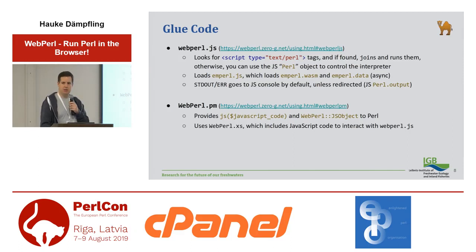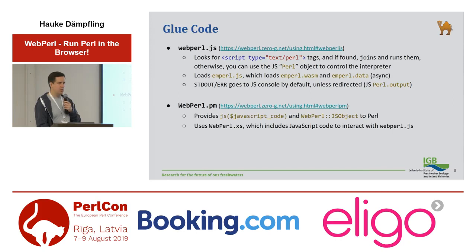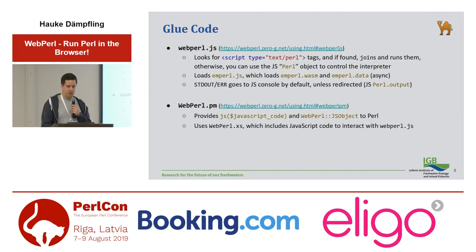On the Perl side — the Perl that is running in the browser — there's webpearl.pm. It provides two main functions and a couple of utility things. The first one is the js function, and the second thing is the class WebPerl::JSObject. There's also a webpearl.xs file behind the pm file. Because it's being compiled by Emscripten, it does not only contain C code — it also contains JavaScript code, because that's sort of the native language there. That's the internal interface between Perl and JavaScript.